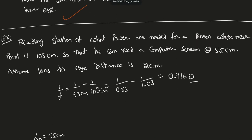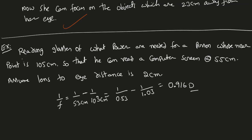The next example: reading glasses of what power are needed for a person? Reading glasses are converging lenses. The person's near point is 105 cm, so they can see clearly at 105 cm away. We want them to read a computer screen at 55 cm away — what power reading glasses are needed so the person can read a screen 55 cm from the eye?